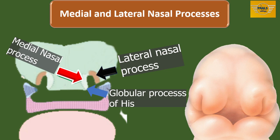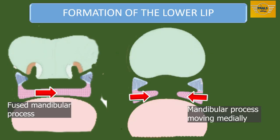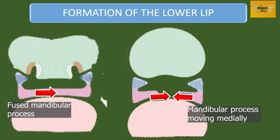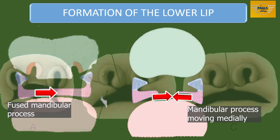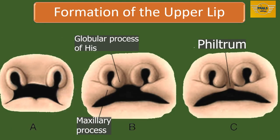We are ready to consider the formation of various parts of the face. We will first start with the lower lip. The mandibular processes of the two sides will grow towards each other and fuse in the midline, forming the lower margin of the stomatodeum.